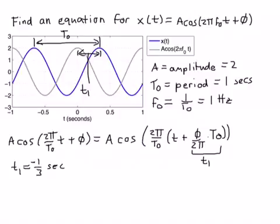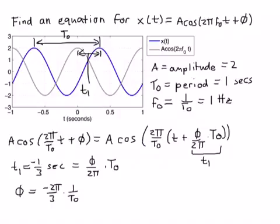So I can plug in and solve for φ. I know that t₁ equals φ over (2π · T₀). Solving for φ by multiplying both sides by 2π gives minus 2π/3 times 1/T₀. Since T₀ in our case is 1 second, this is just minus 2π/3. That will be our value for φ.